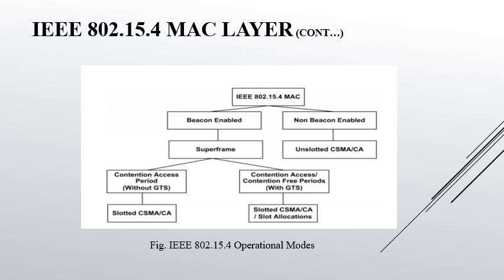The operational modes of IEEE 802.15.4 are shown through a flowchart. The IEEE 802.15.4 MAC layer operates in two modes: beacon-enabled and non-beacon-enabled. The non-beacon-enabled mode uses unslotted CSMA-CA, whereas the beacon-enabled mode uses a superframe. The superframe is further divided into two parts: the contention access period (without GTS) and the contention free period (with GTS). The contention access period uses slotted CSMA-CA, whereas the contention free period may use slotted CSMA-CA or slot allocations.